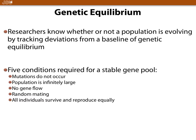The five conditions for a stable gene pool are: mutations do not occur, the population is infinitely large, there is no gene flow, random mating occurs, and all individuals survive and reproduce equally. We know mutations do occur through DNA replication, and populations are never infinitely large, so these conditions cannot fully hold.